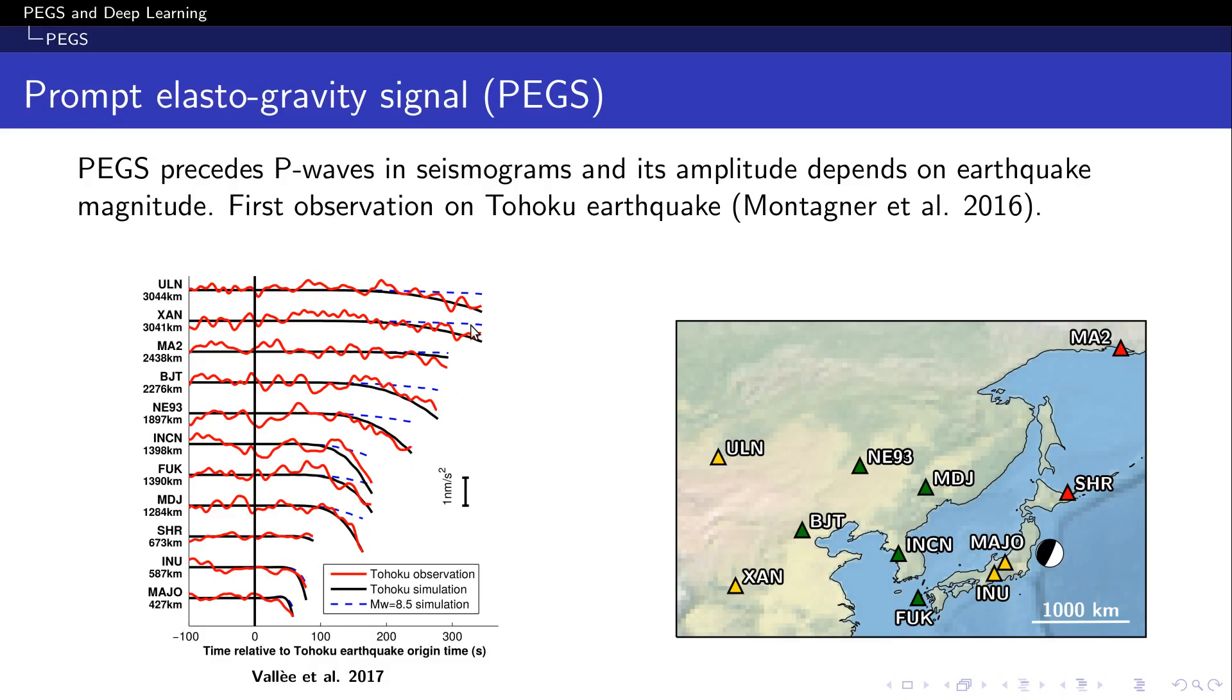A coherent long wavelength signal is clearly observable before the arrival of P waves at each station and is indicated here by the red curve. The black line is the modeled waveform for the Tohoku earthquake.